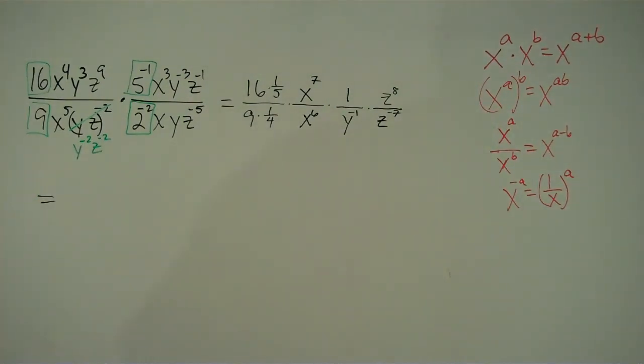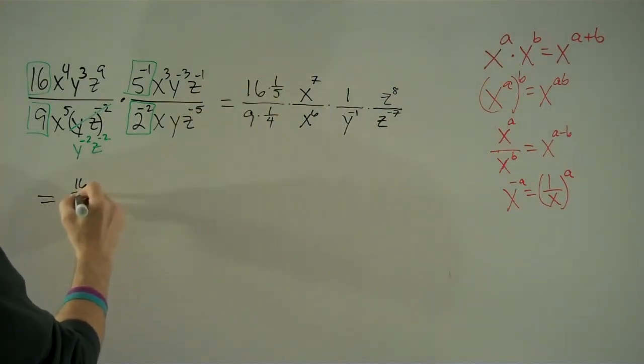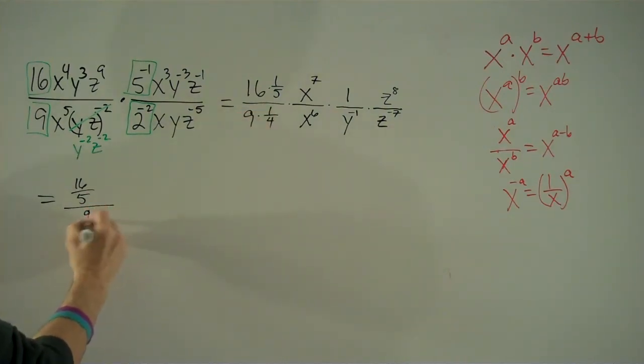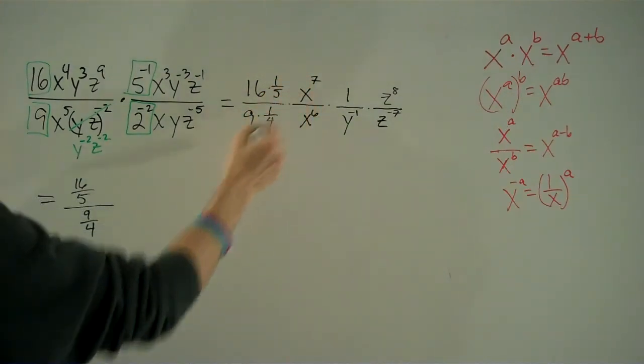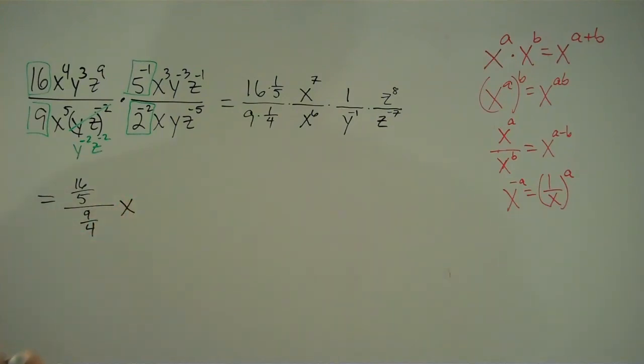Okay, this isn't all that hard at all, this is going to be a piece of cake. 16 times 1 over 5, that's 16 fifths. 9 times 1 over 4, that's 9 fourths. x to the 7th divided by x to the 6th, that is x to the 7 minus 6, that is x to the 1 power.